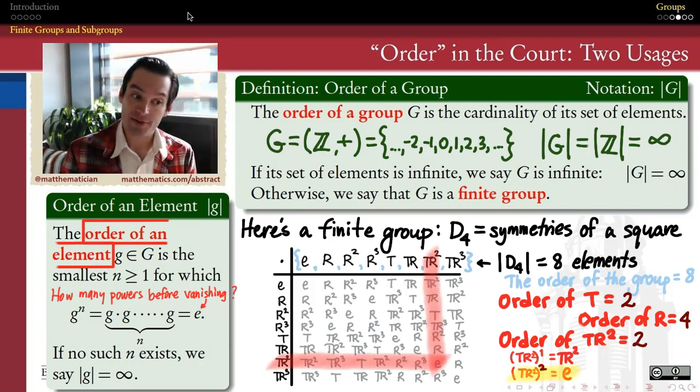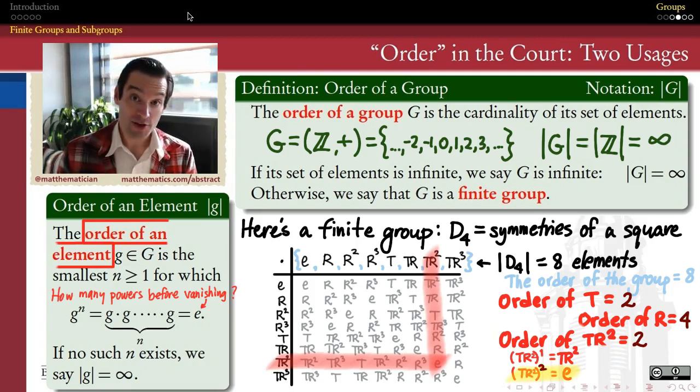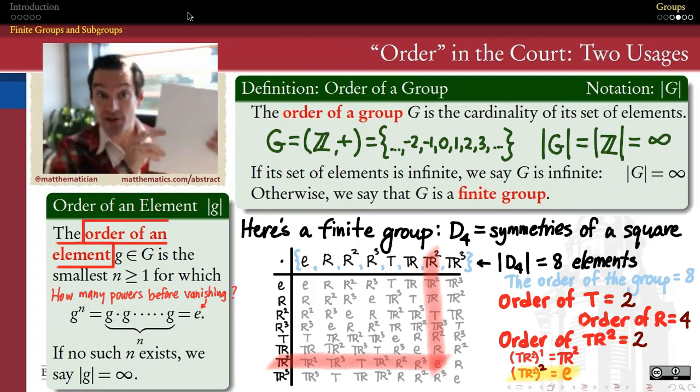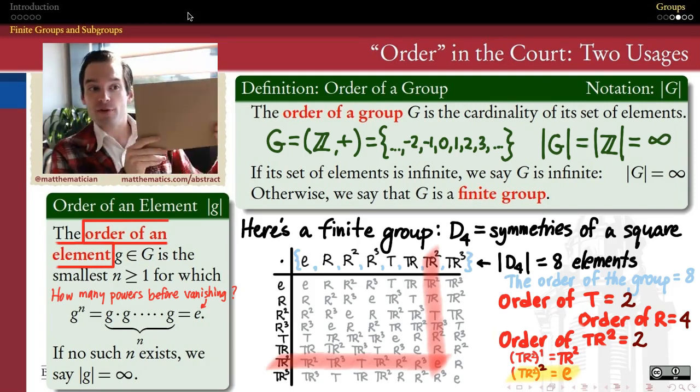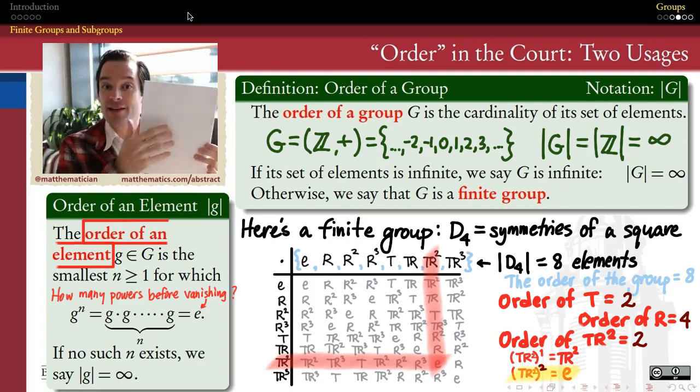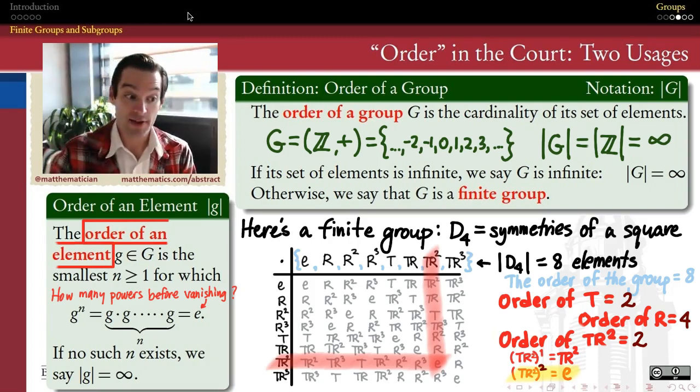And if you do the geometry on this, you'll find that tr² is indeed also a reflection, just like t was. It's a different reflection than t was. Like who knows, maybe it's this one. But if you do that same reflection twice, as with any reflection, you end up back at the identity again.